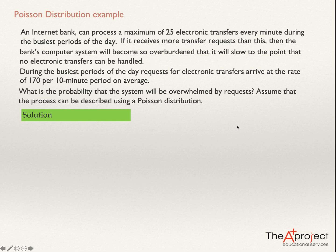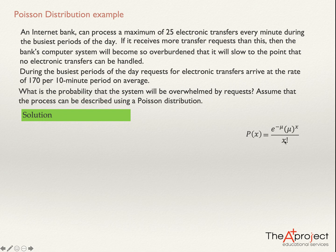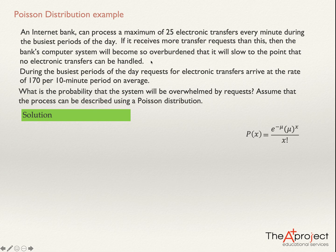I'm going to type here the formula of the Poisson distribution. Remember, the probability of x equals e to the power of negative mean, times the mean to the power x — and this x is the same x of the question — divided by x factorial. The value in the question is 25, which is important because I'm looking for the probability that the system will be overwhelmed. This internet bank can process a maximum of 25 electronic transfers, so it will be overwhelmed if it needs to process more than 25 electronic transfers per minute.